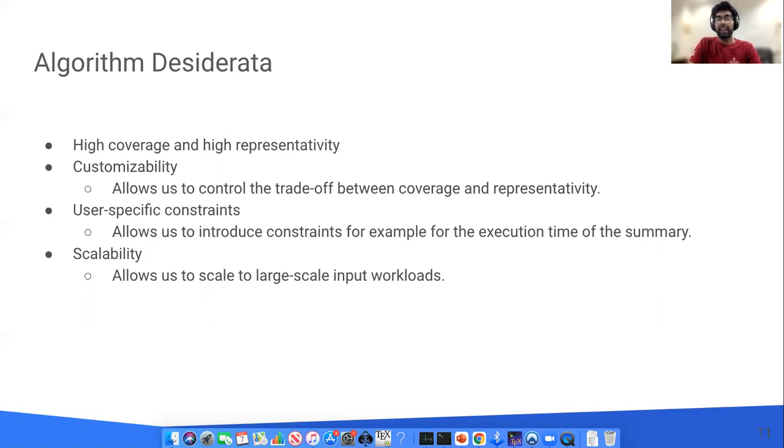So in order to develop efficient algorithms there are several desirable characteristics. The first two properties are that the algorithm should be able to generate a summary that has a high coverage as well as high representativity. The third characteristic we would like to see is that of customizability. The algorithm should allow the users to control the trade-off between the two metrics. Fourth, the algorithm should be able to incorporate user constraints such as the size of the summary, the execution time of the summary, etc. And finally, we want the algorithm to be scalable so that it can handle millions of queries as input.